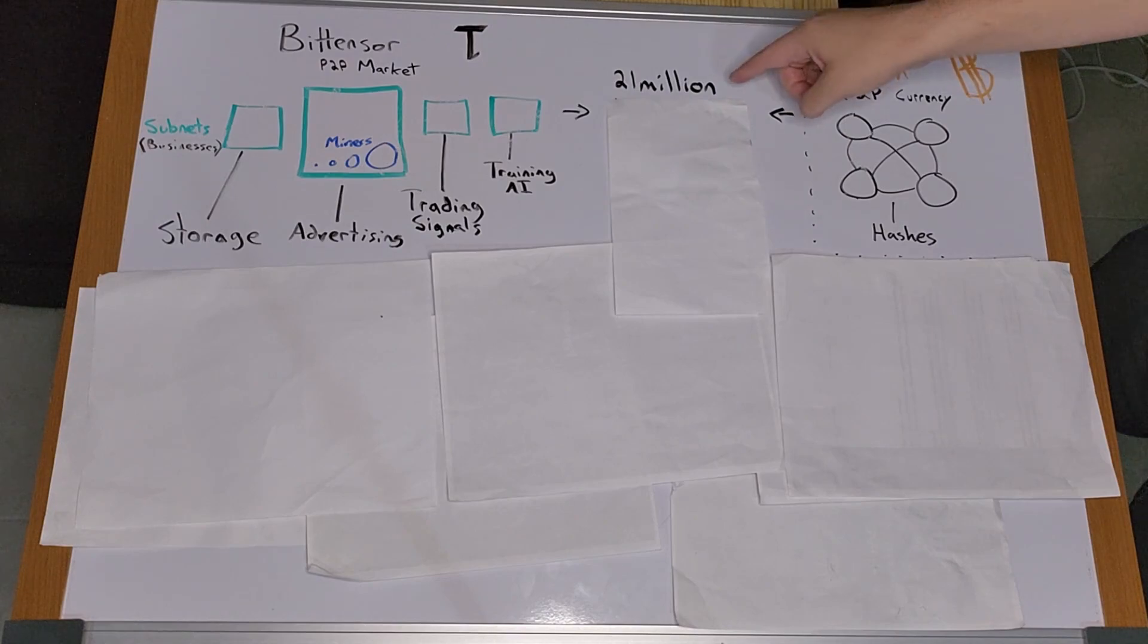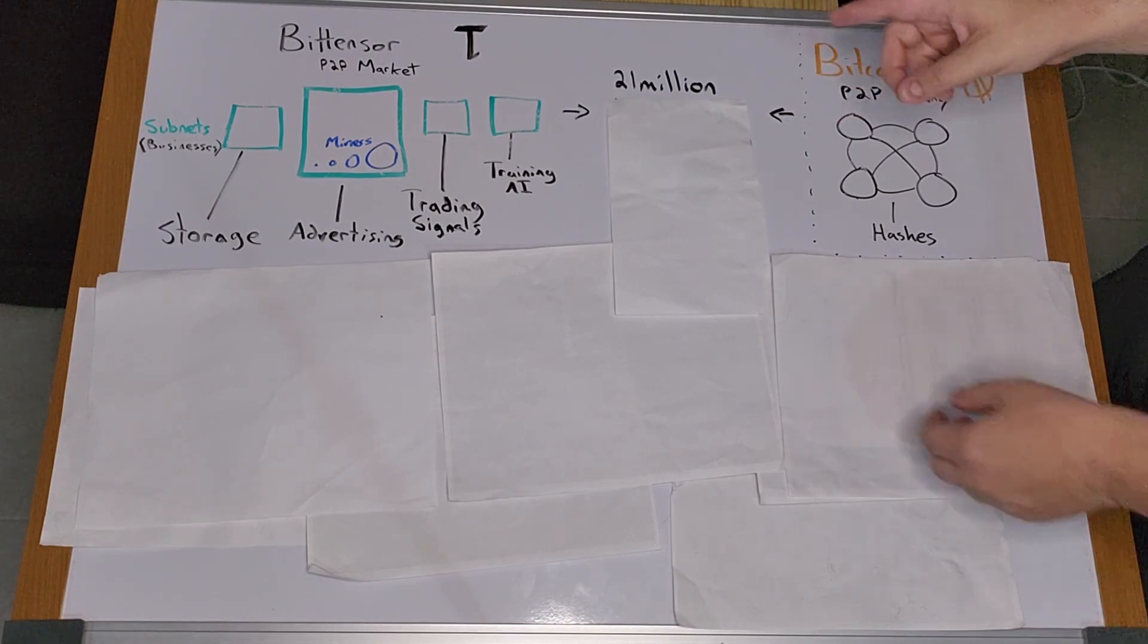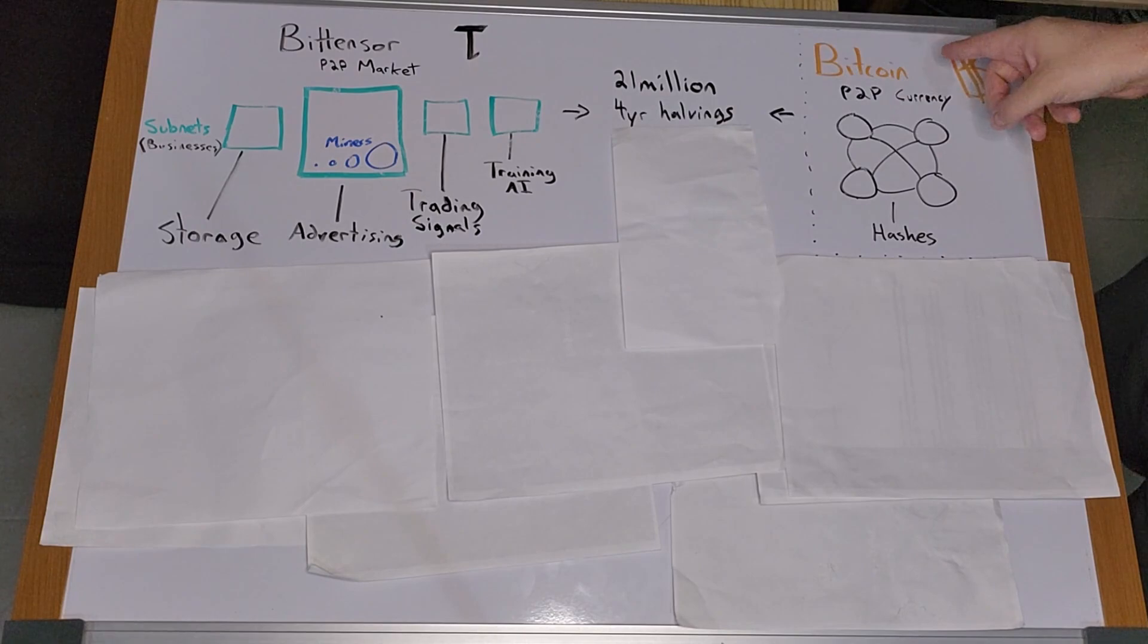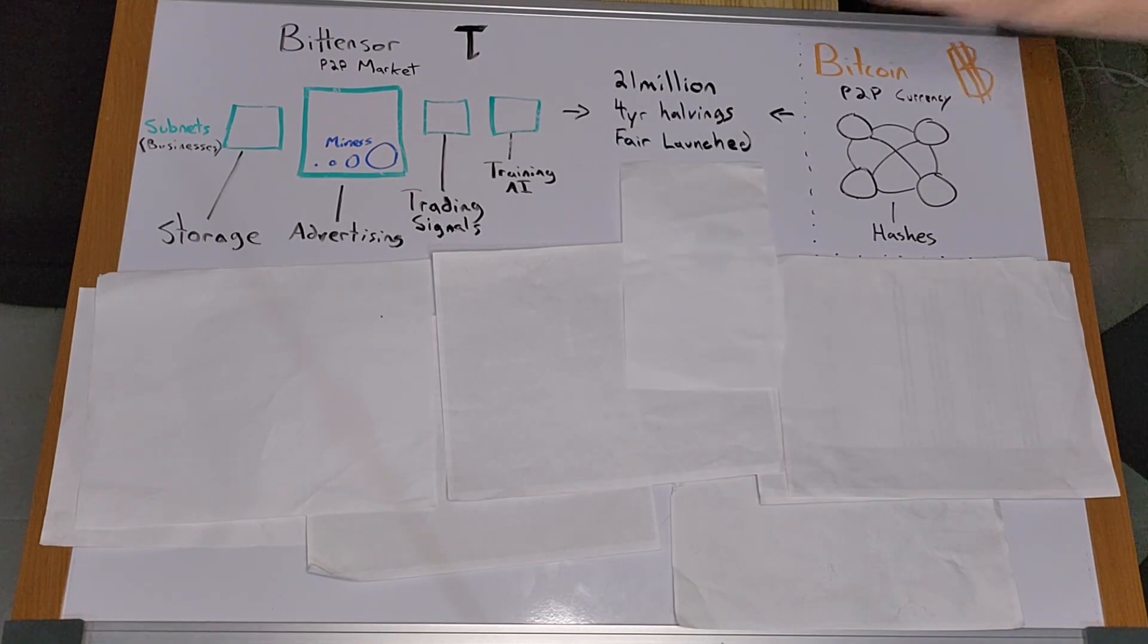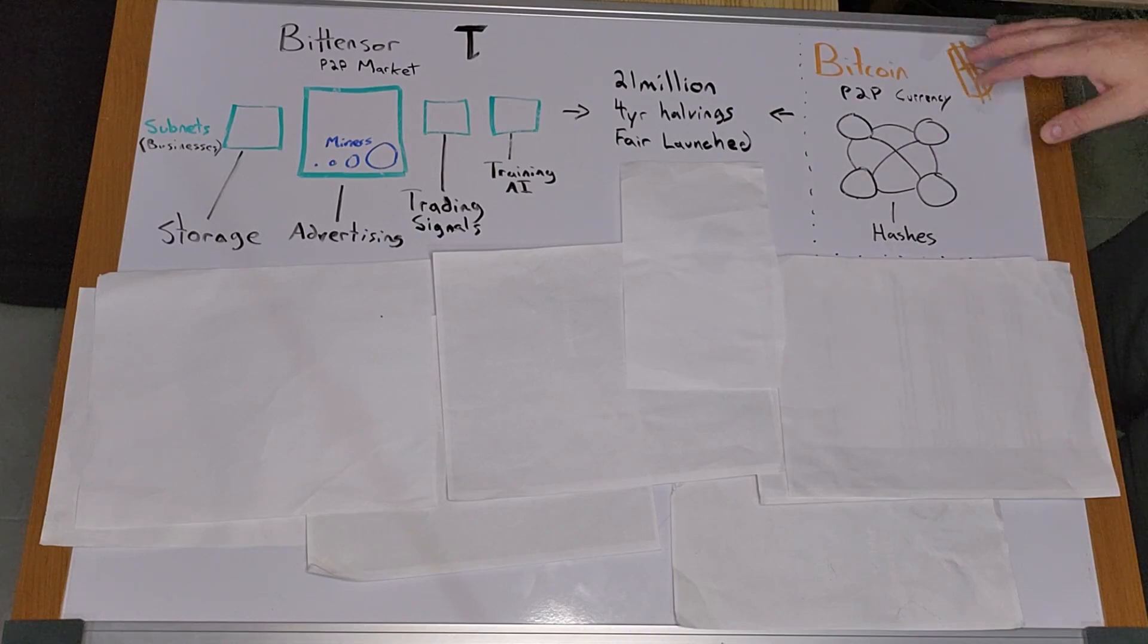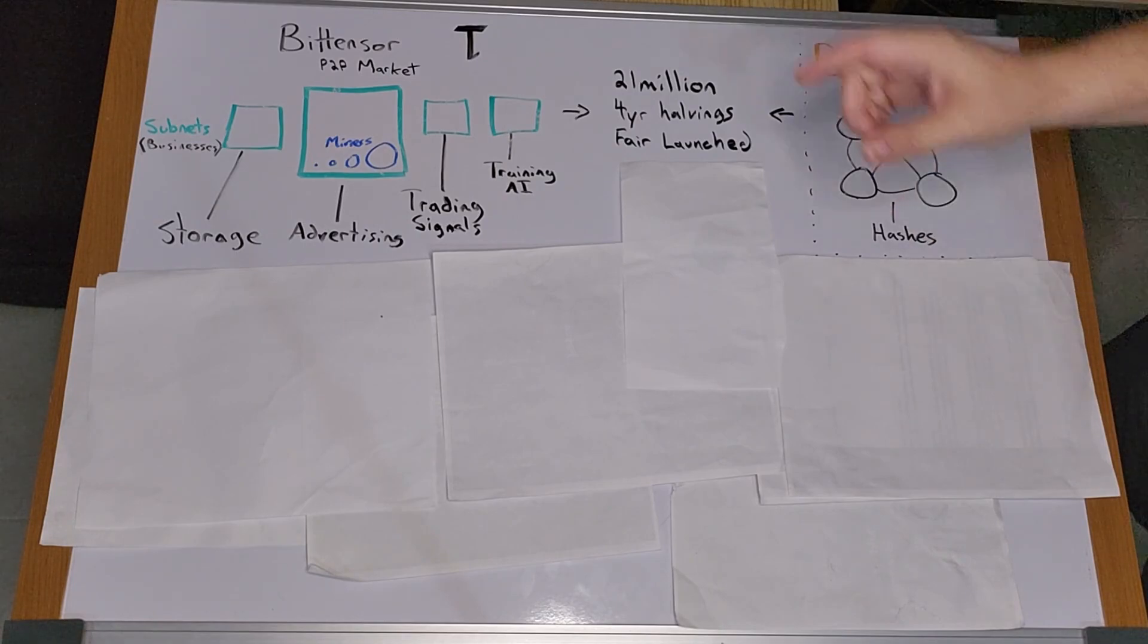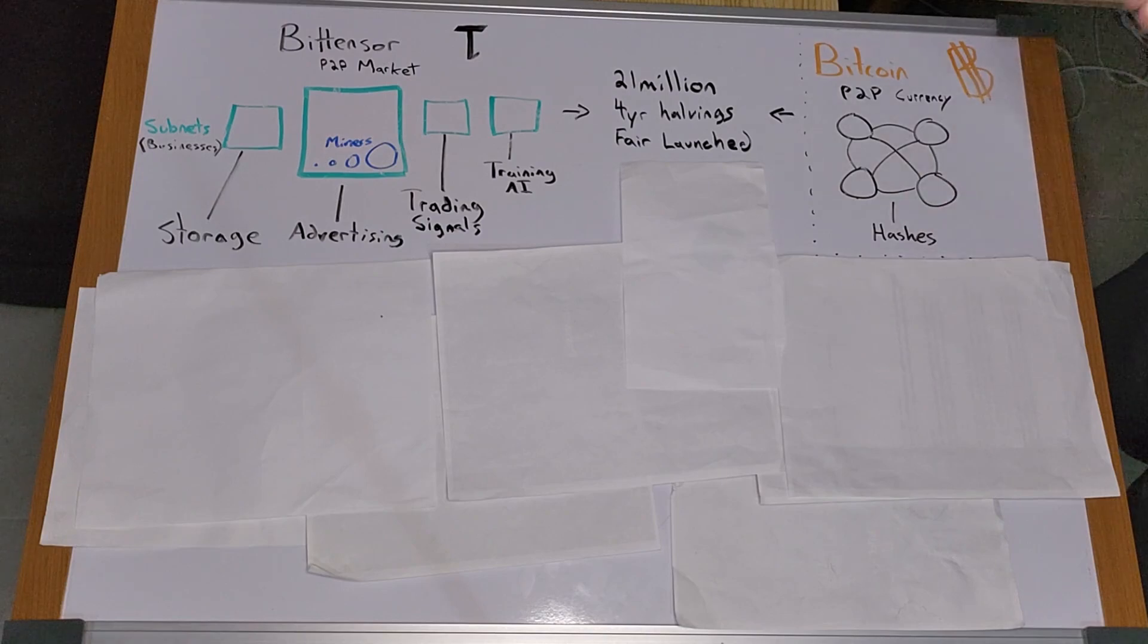BitTensor has a 21 million max supply, just like Bitcoin. It has four-year halvings, just like Bitcoin. It was fair launch. There was no team allocation, no pre-mine, none of that BS at all, just like Bitcoin. In order to mine the token, miners have to actually produce something of value, not just worthless hashes.